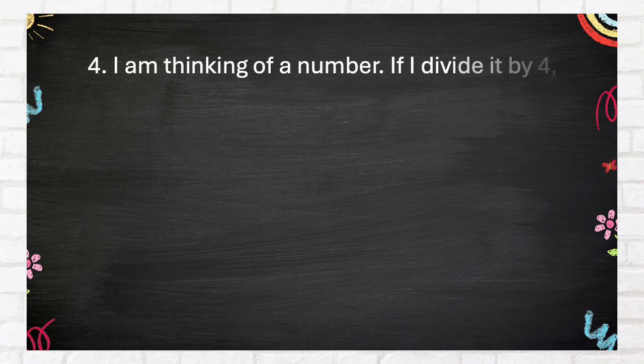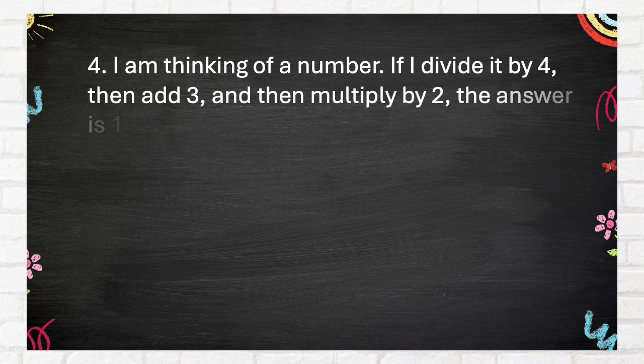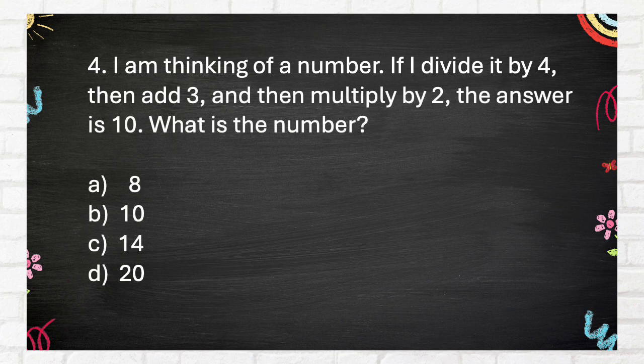Number 4. I am thinking of a number. If I divide it by 4, then add 3, and then multiply by 2, the answer is 10. What is the number? A. 8. B. 10. C. 14. D. 20.